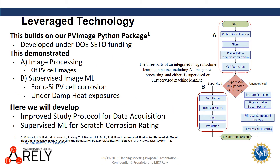The algorithm for automated classification of scratch corrosion tests developed in this project will leverage technology that was developed under Department of Energy funding to classify degradation of photovoltaic modules. Here we'll use the same strategy of quantitative image processing followed by supervised image machine learning applied to scratch corrosion ratings.